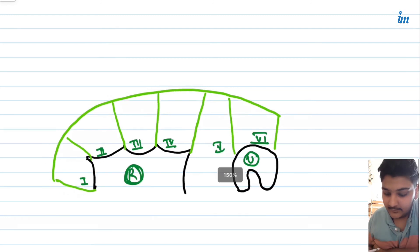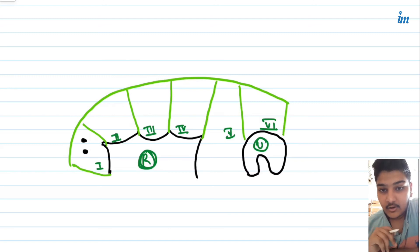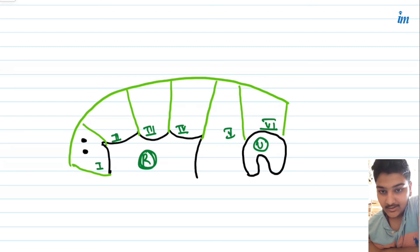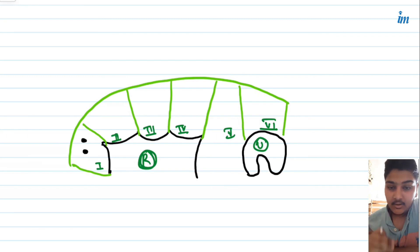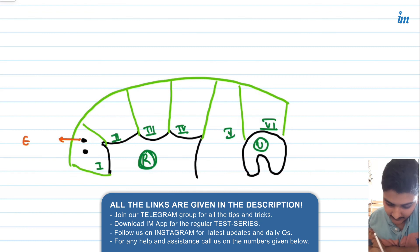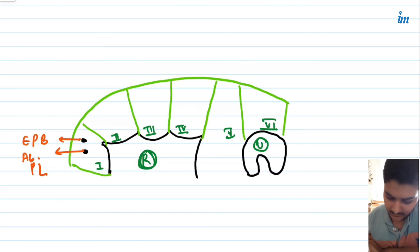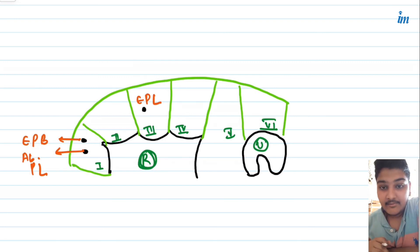In compartment one, we have two tendons: extensor pollicis brevis and abductor pollicis longus. If you remember the snuff box, the two lateral boundaries are extensor pollicis brevis and abductor pollicis longus — these same structures are contents of the first compartment, the lateral-most compartment of the extensor retinaculum. In compartment three, we have the tendon of extensor pollicis longus, which forms the medial boundary of the snuff box.